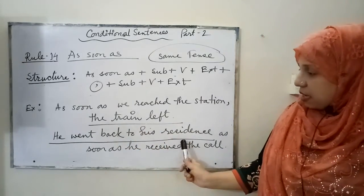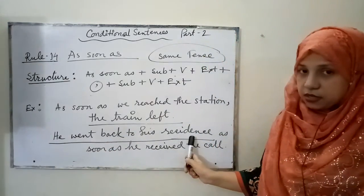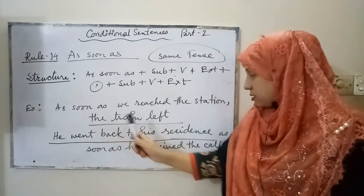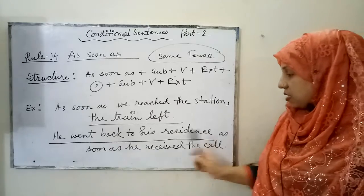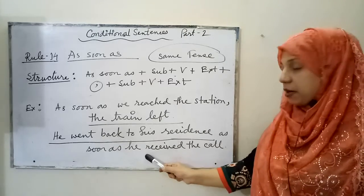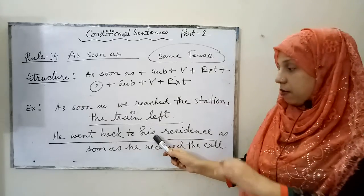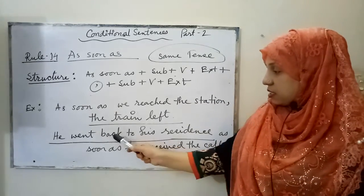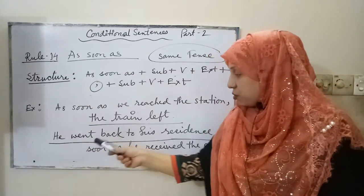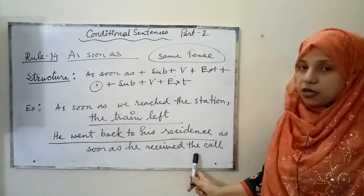Another example: 'He went back to his residence as soon as he received the call.' Here 'went' is simple past tense, and 'received' is also simple past tense — both clauses are in the same tense. It may happen that the first part is given as a blank, and you have to fill it in accordingly.